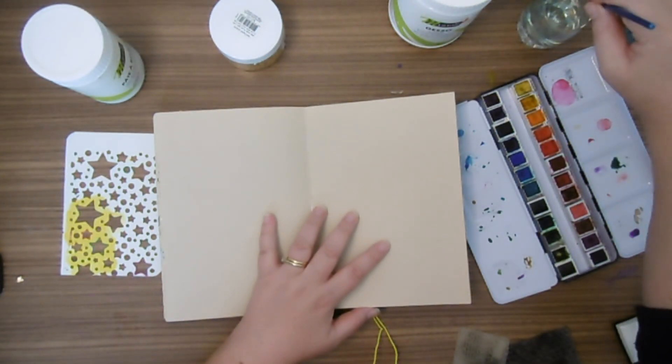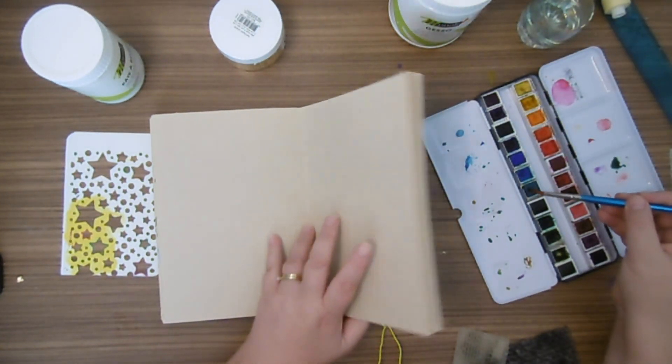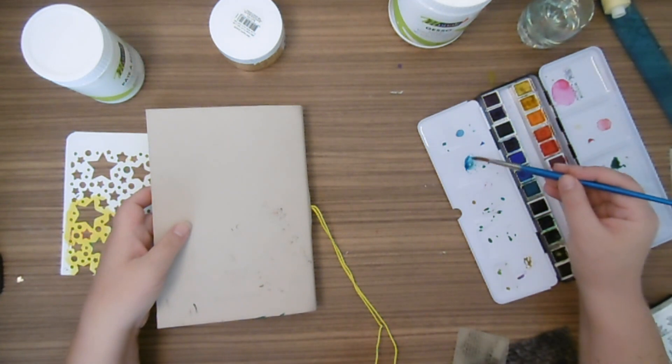Et bien sûr de l'aquarelle. Donc du coup, comme la couleur pour cette lunaison c'est le bleu turquoise, voilà, c'est cette couleur là.